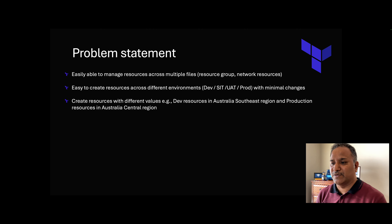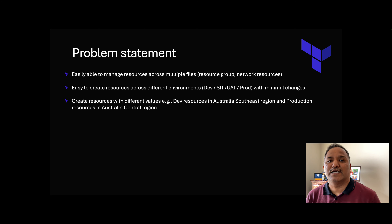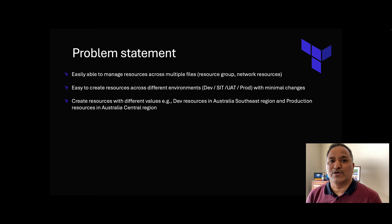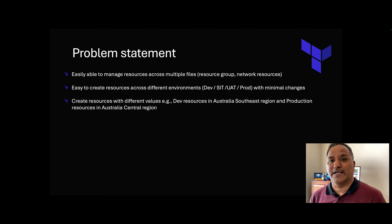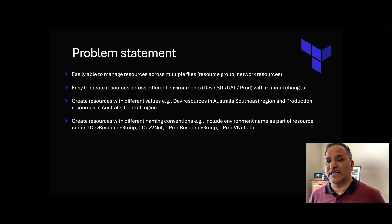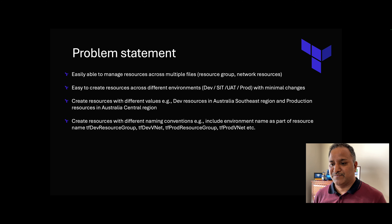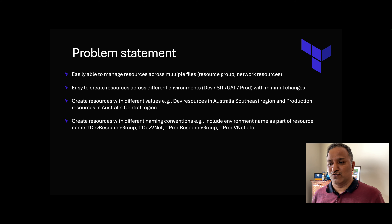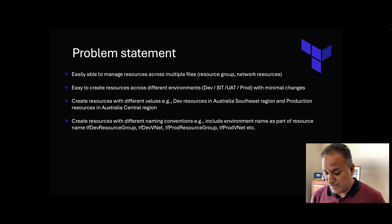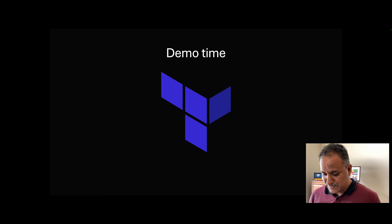Next, we would like to create resources with different values. Your organization might use different conventions for different types of resources, or it might want to create resources in different places. For example, in Microsoft Azure, I might want to create dev and UAT resources in Australia Southeast, but pre-production and production in Australia Central. It could also be about naming conventions — we might want to prefix or suffix resources with the environment name, like tfdev resource group or tfdev VNet. Based on these requirements, we are going to see how we can use Terraform variables to achieve all these things.